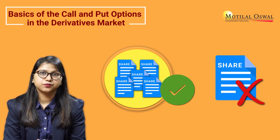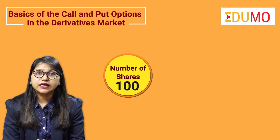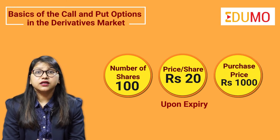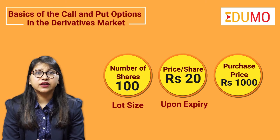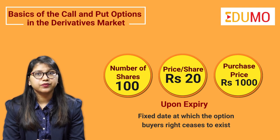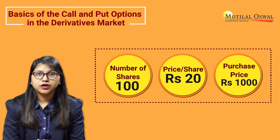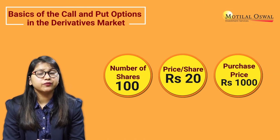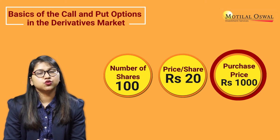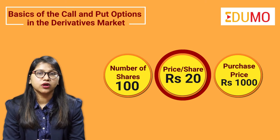Suppose we purchase an options contract to buy 100 shares at rupees 20 each upon expiry, and we purchase this option for rupees 1000. The 100 shares is the lot size of the option, whereas the expiry is the fixed date at which the right of the option buyer will cease to exist. Upon expiry, the buyer will have to decide if they want to exercise the right or not. We have paid rupees 1000, or rupees 10 each for the 100 shares, to buy the option — this price is known as the premium. The fixed price of rupees 20 is called the strike price of the contract.